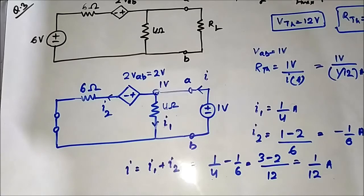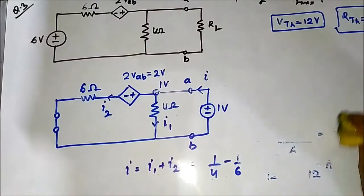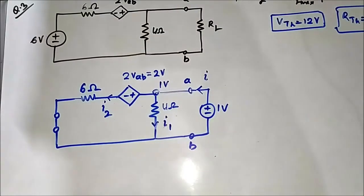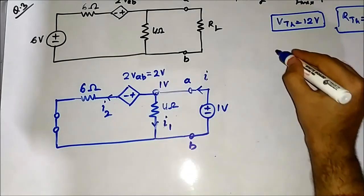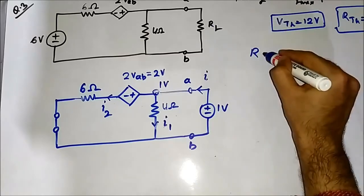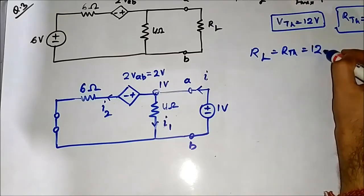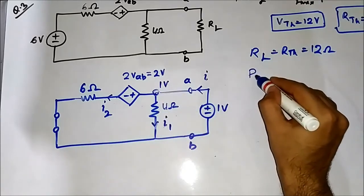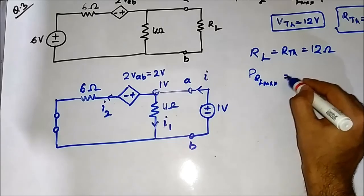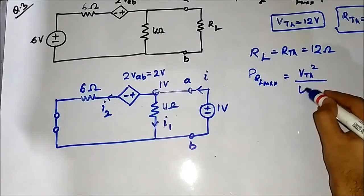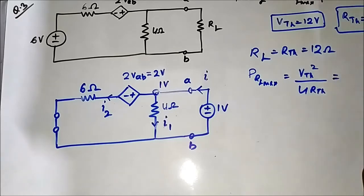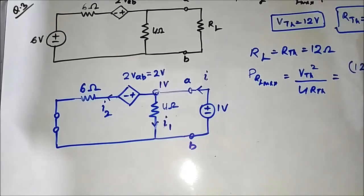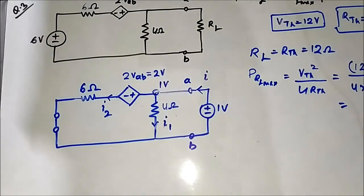We have now obtained both VTH and RTH. As per the statement of the maximum power transfer theorem, for maximum power to be transferred to the load, the load resistance value should be equal to the Thevenin resistance, which equals 12 ohm. The maximum power transferred is equal to VTH squared divided by 4RTH, which equals 12 squared divided by 4 times 12.